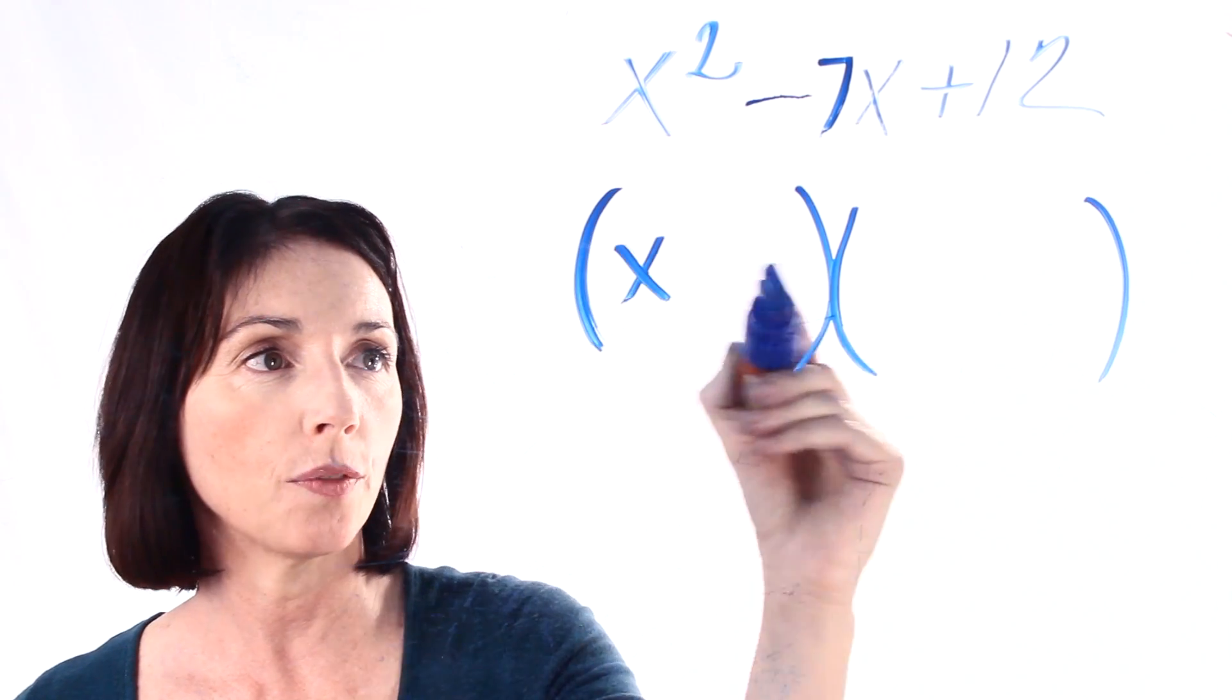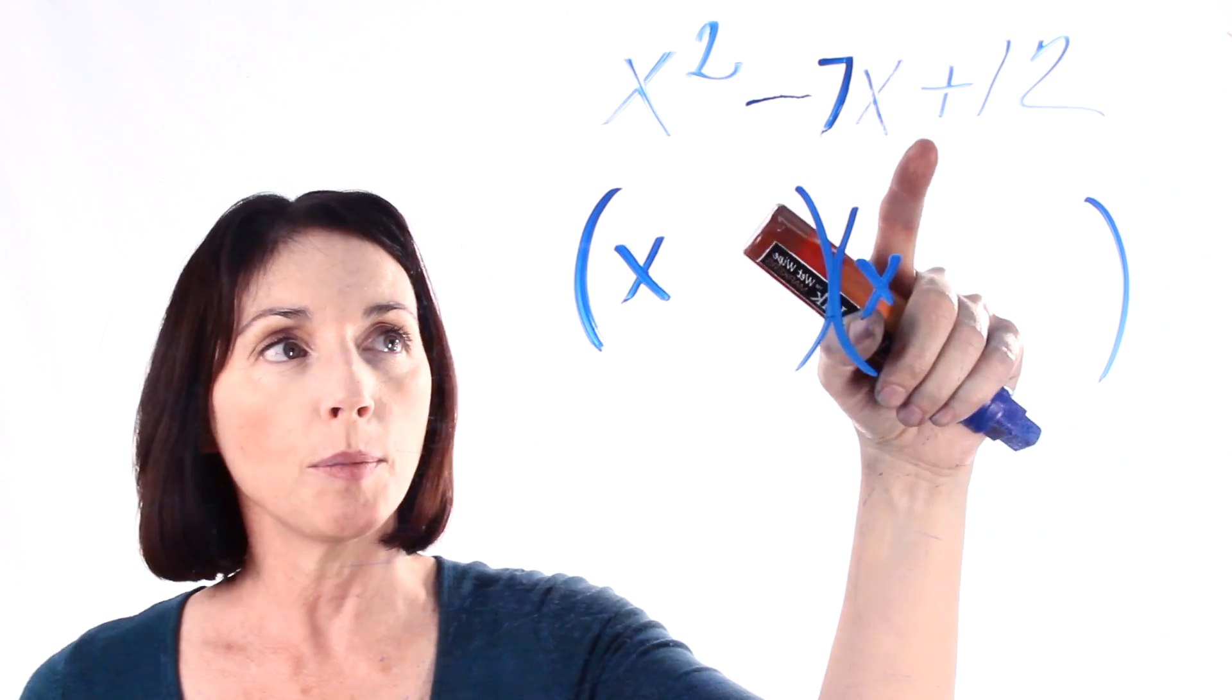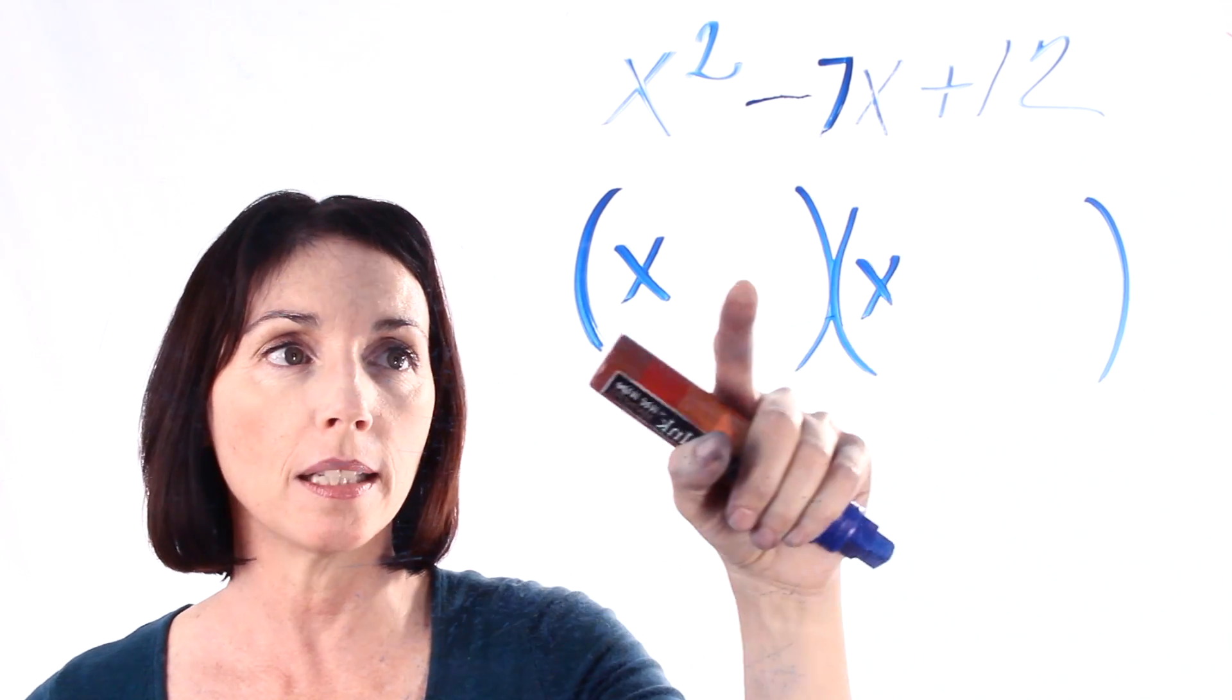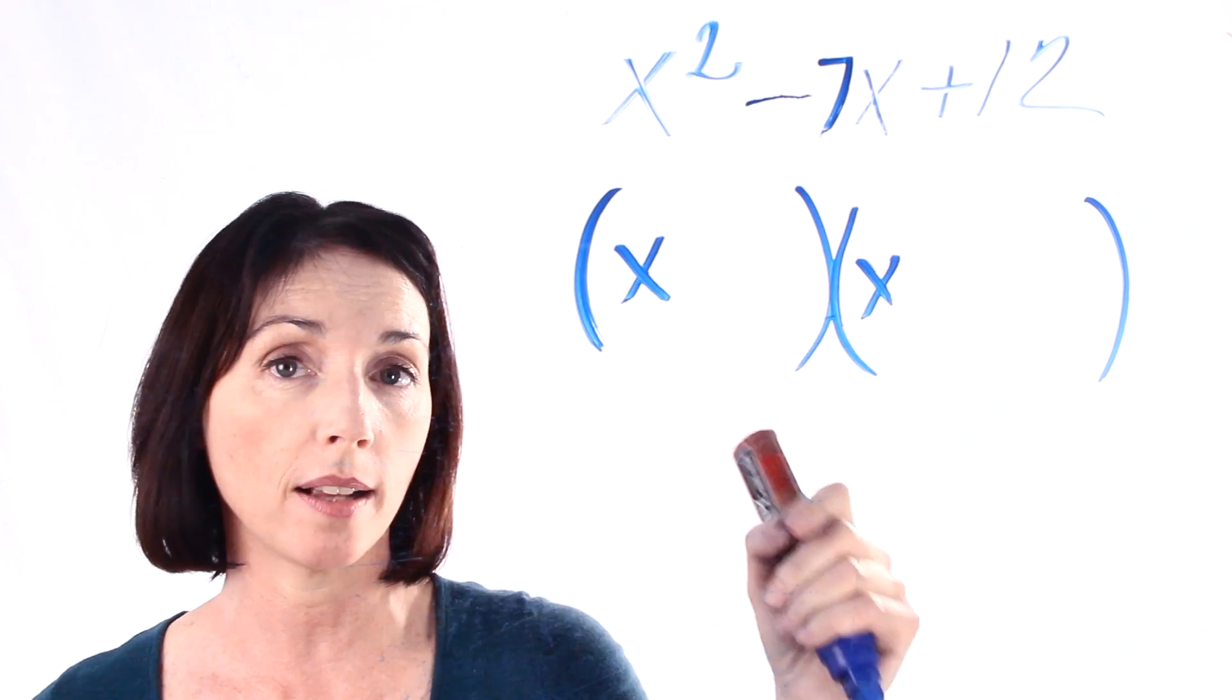We need an x in front of both of them so that when we multiply together we get our x squared. Now anytime you have a plus sign here it means that the signs here and here have to be the same, so that when you multiply them together you get a positive.